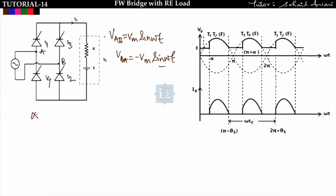We must trigger the thyristor after angle θ, where θ is the angle at which the supply voltage equals E — that is, θ = sin⁻¹(E/Vm). This was already explained in the half-wave controlled rectifier for RE load: if we trigger T1 and T2 before θ, they are in reverse bias and won't conduct. So the triggering angle must be greater than or equal to θ. Here we trigger at ωt = α, where α > θ.